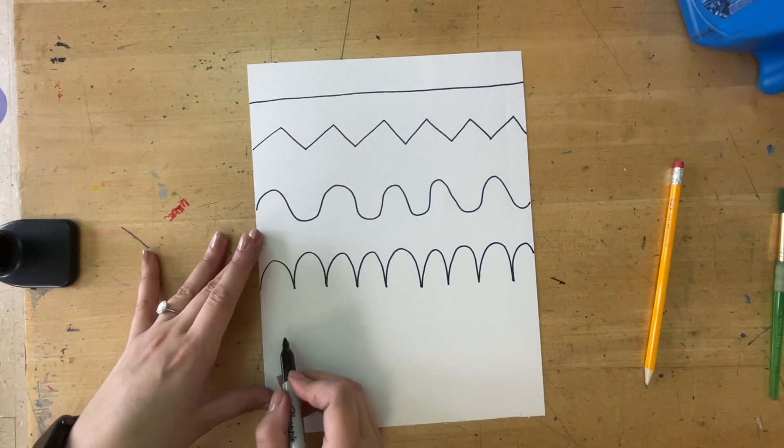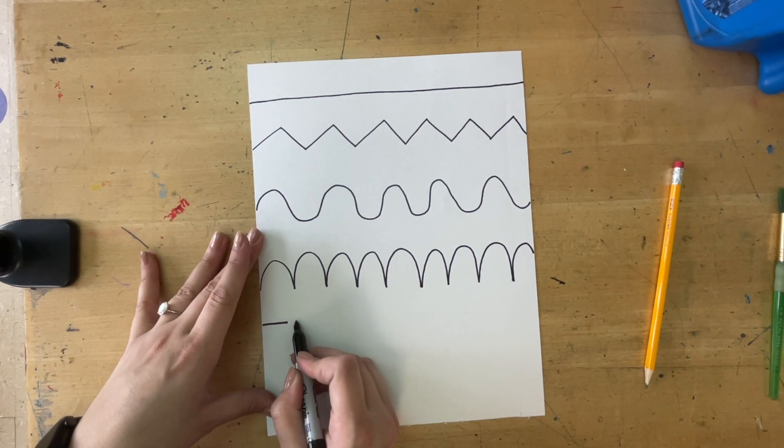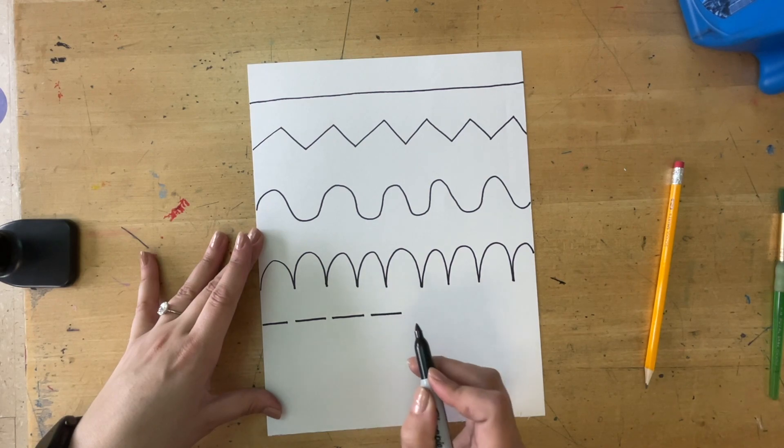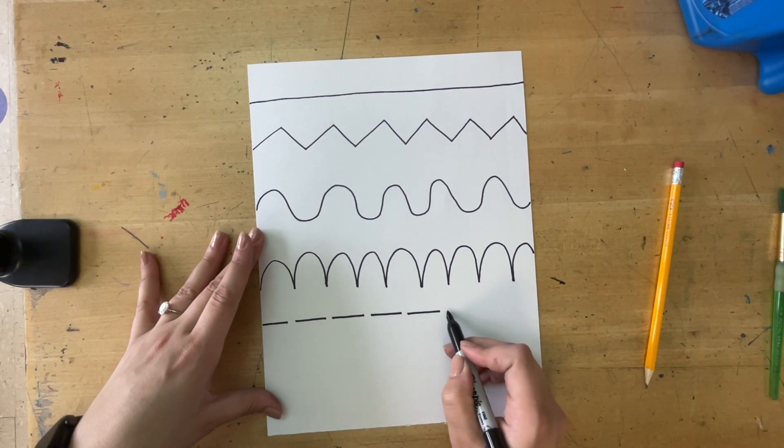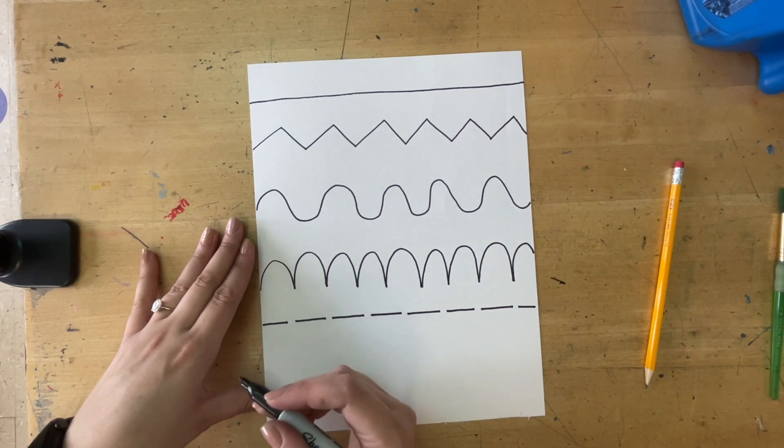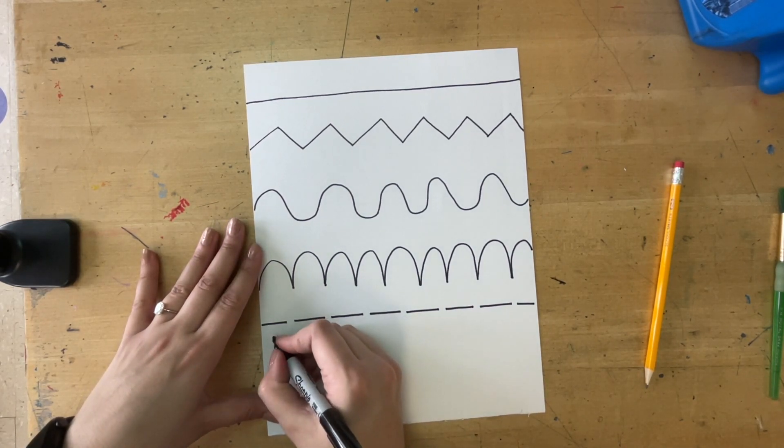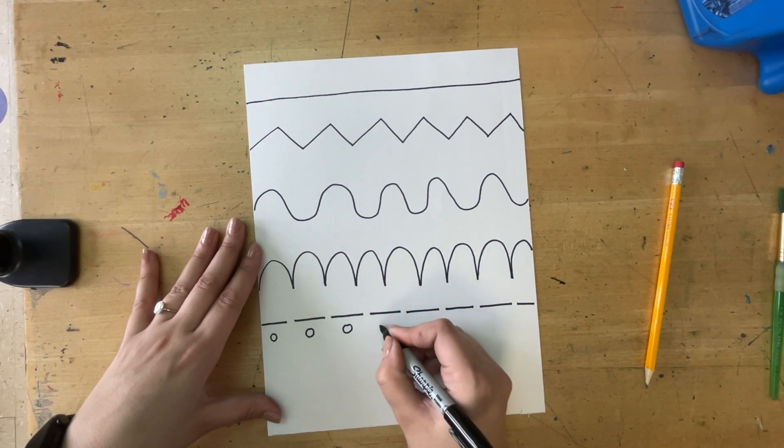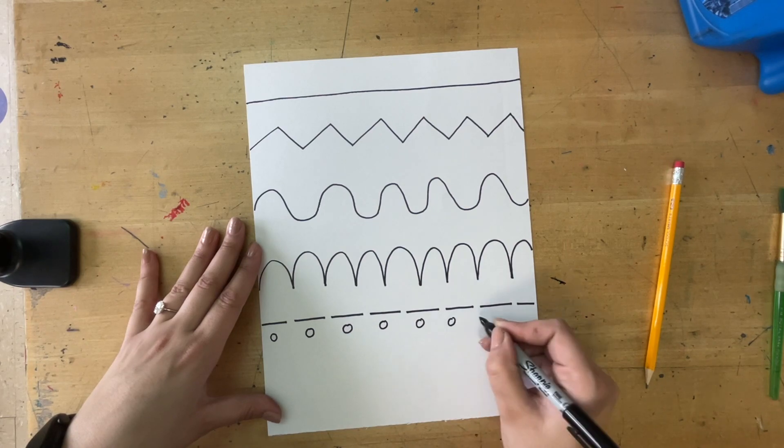Next is a dashed line, so you're going to do a line, pick up, line, pick up, line, pick up. It looks almost like the lines that you see on the road. Underneath that one we're going to do a dashed line but we're going to make it dotted, so a dotted line. I'm going to make my dots pretty big and I'm going to go in and fill them in later.